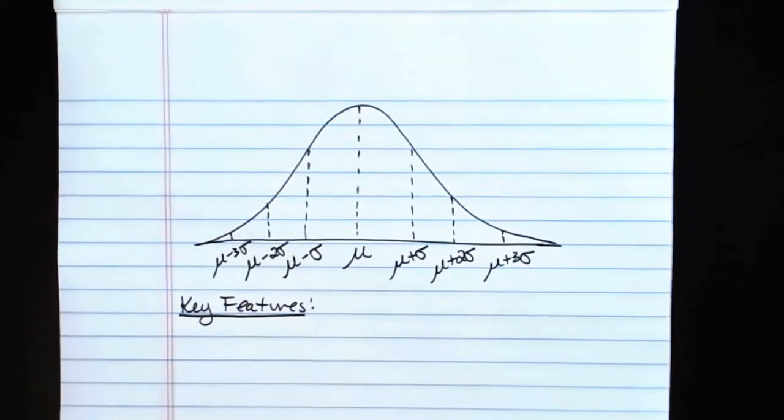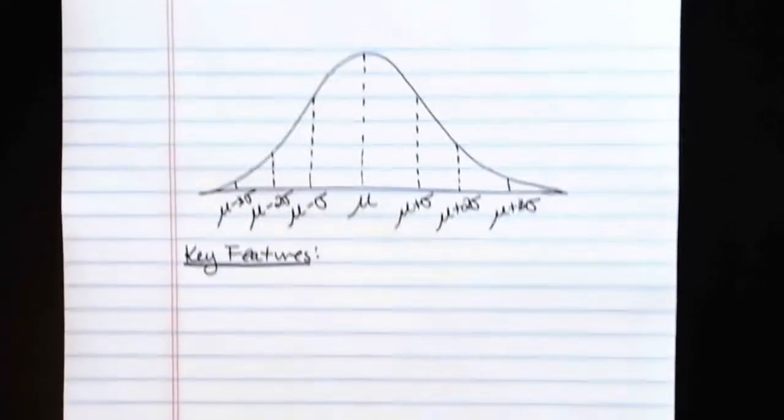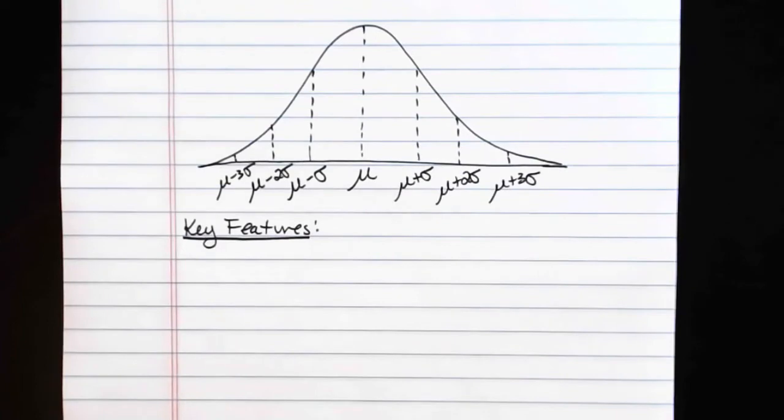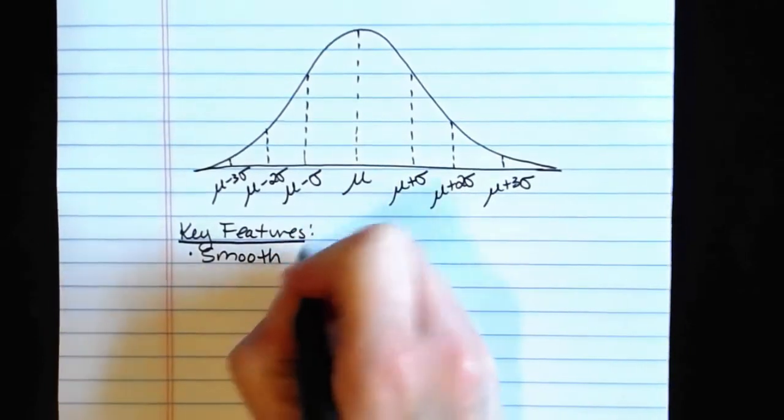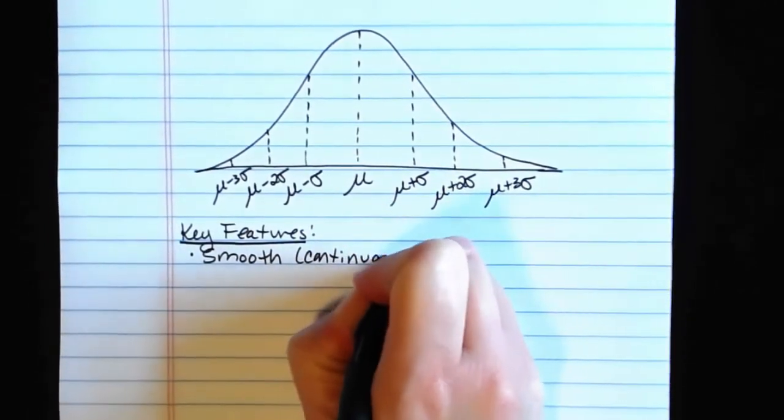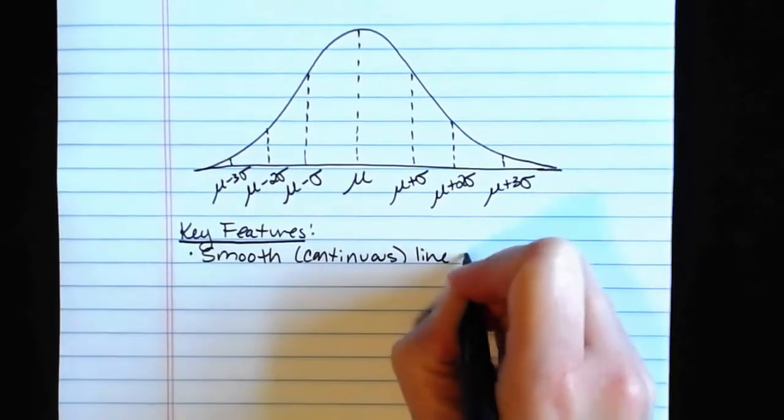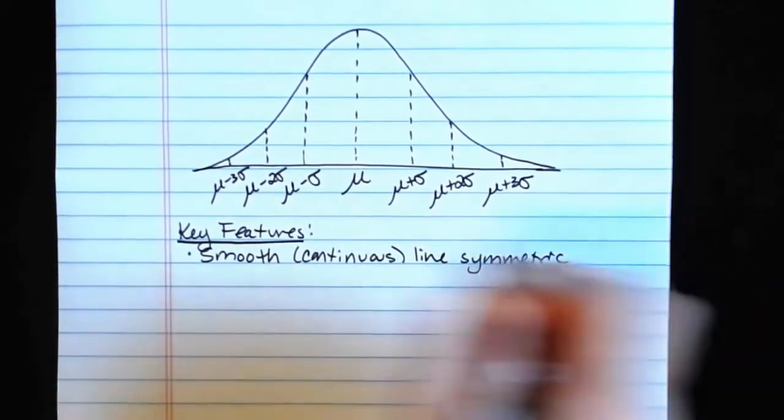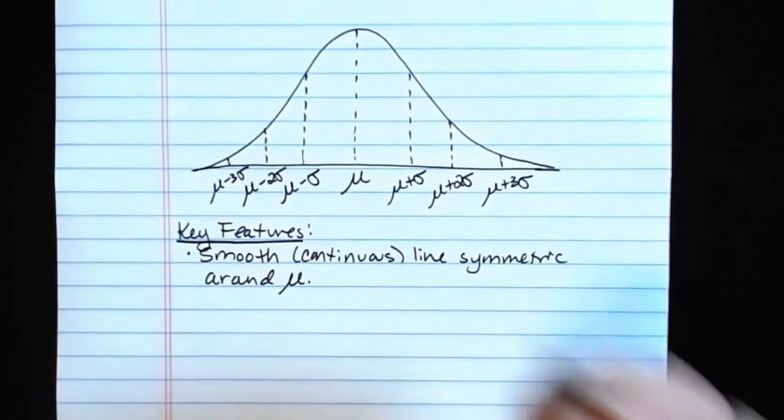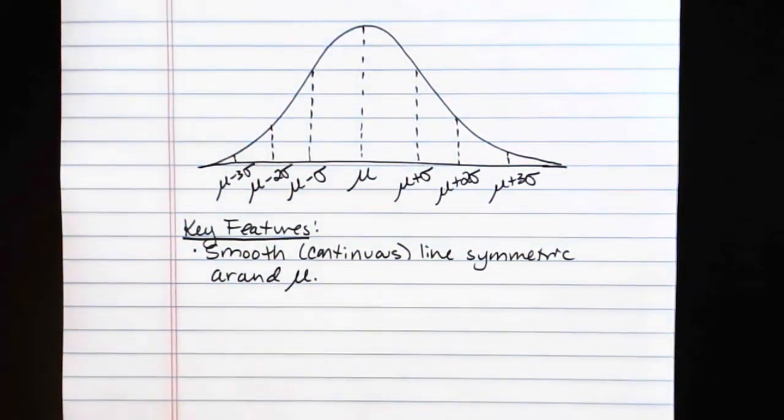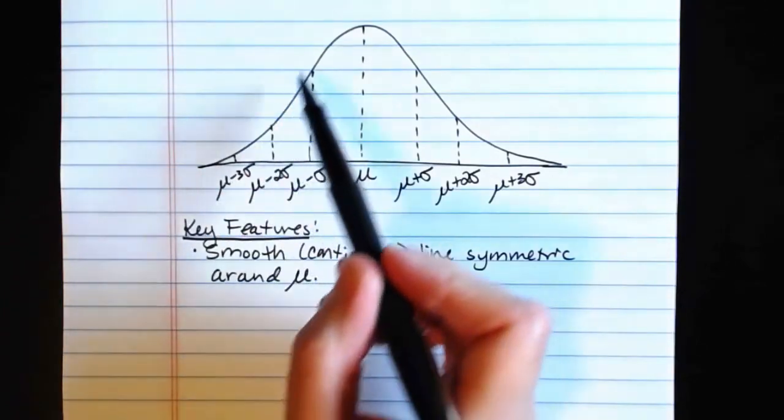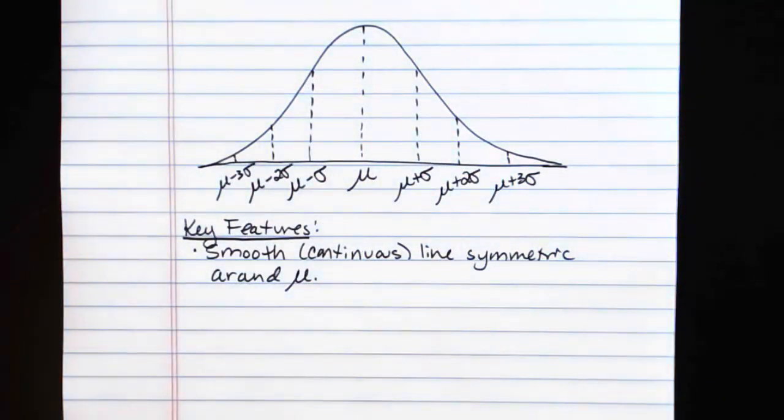Some key features of the graphs of normal probability distributions. Thing one: the line is a smooth line or continuous that is symmetric around mu. So smooth and continuous there just means you can draw the whole line without having to pick your pencil up off the paper, and it doesn't have any jagged pointy parts. It's nice, smooth, no holes, no missing parts, and it is symmetric with respect to mu. Both sides are identical.